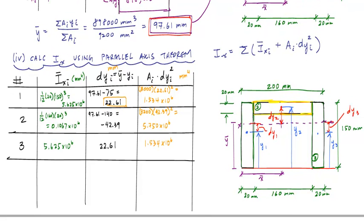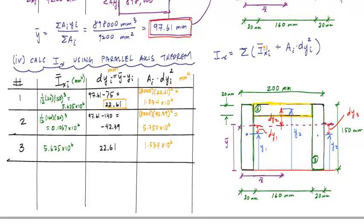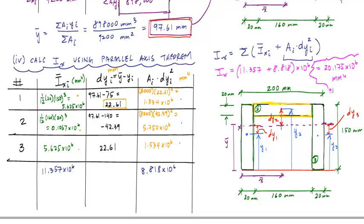And now all I've got to do is match up the parallel axis theorem, which means I have to take the sum of this first column, 11.3557 times 10 to the 6 millimeters to the fourth. And if I add up which for this term right here, this would be 8.818 times 10 to the 6 millimeters to the fourth. And last but not least, if I add these two numbers together, this will give me IX, which is going to be 20.175 times 10 to the 6 millimeters to the fourth, and that would be our answer for the moment of inertia of this channel shape about its horizontal axis.